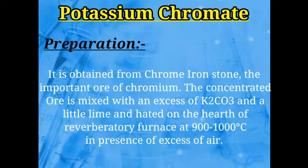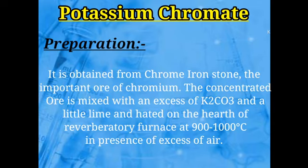An ore is a compound — a mixed compound — which contains several metals and some impurities, extracted by digging from the earth's crust or mountains. The concentrated ore of chrome iron stone is mixed with a solution of potassium carbonate, and a little lime is added to it.